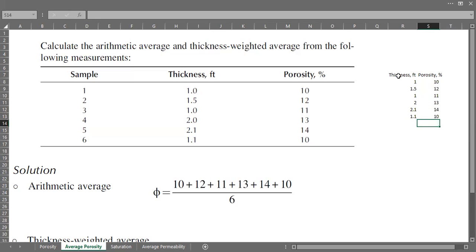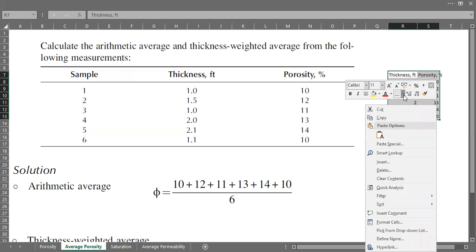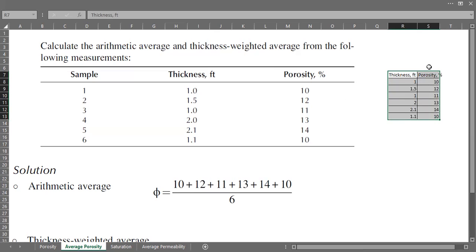I'll make my own table. If you want to do averaging, it will be summation of the porosity values from the six samples divided by the number of measurements or samples, which is six.